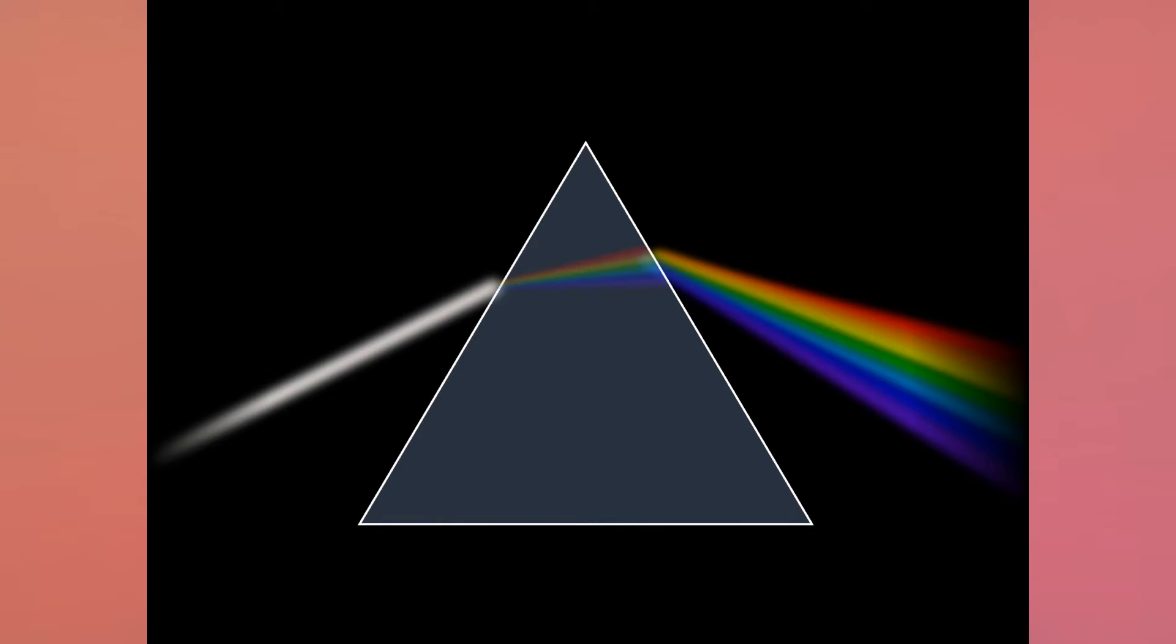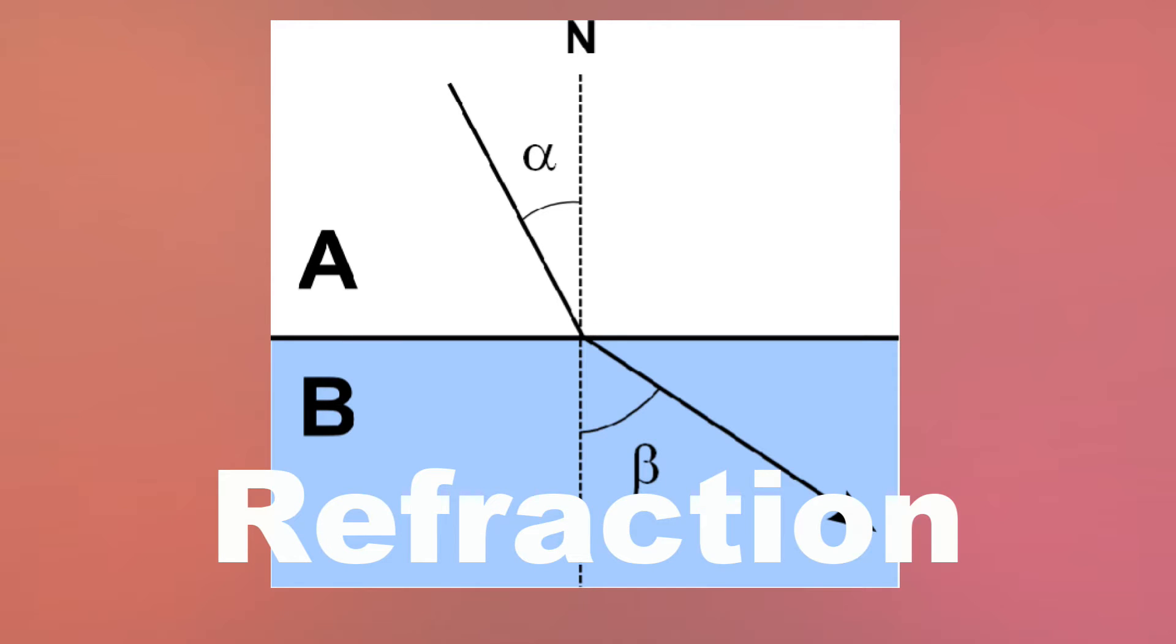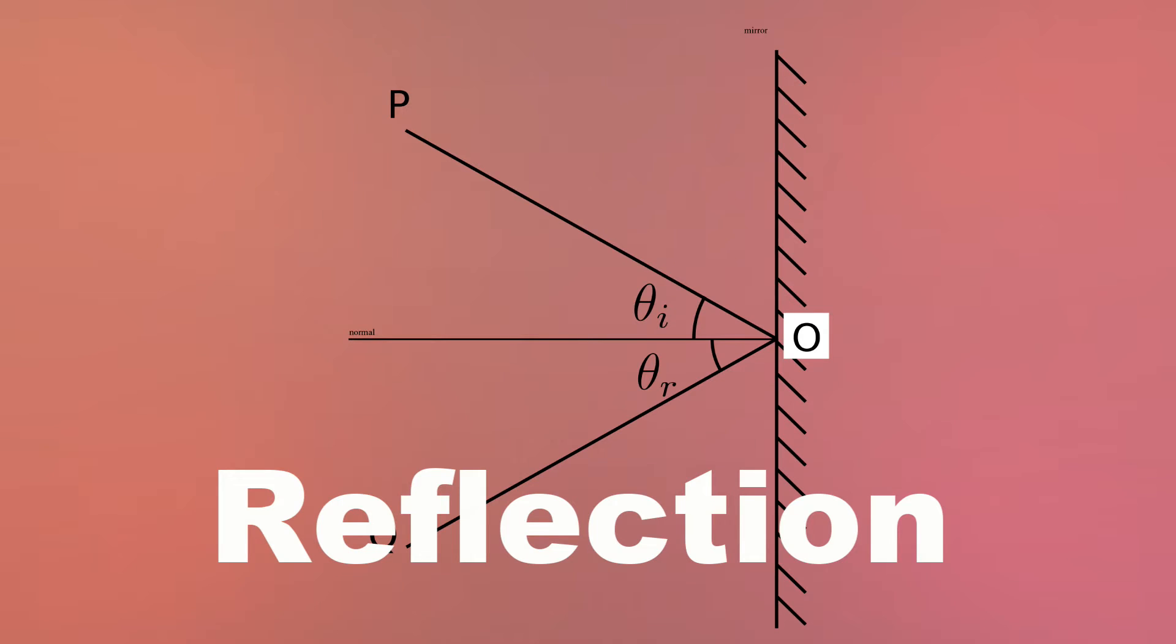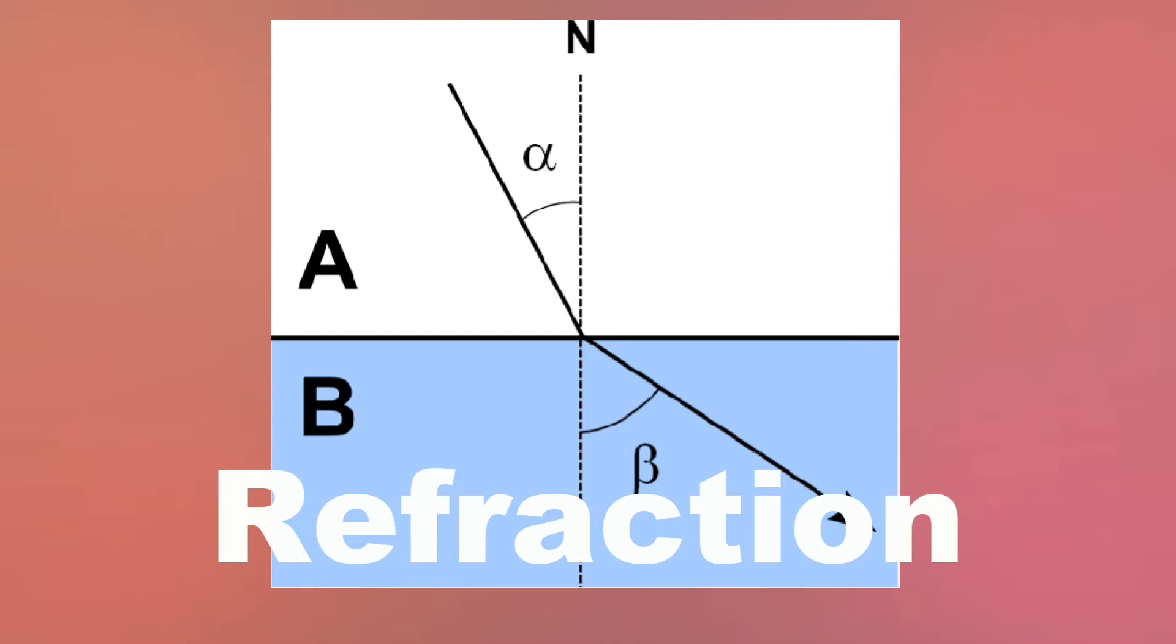How does a prism make a rainbow of colors? It all comes down to a property of light called refraction. While reflection is light bouncing off of something, refraction is light passing through something.